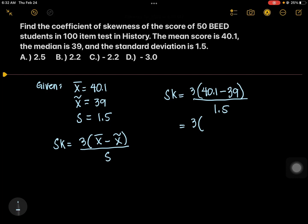40.1 minus 39 is 1.1 over 1.5. And then you multiply 3 times 1.1, that is 3.3 over 1.5. We divide 3.3 and 1.5, the answer is 2.2.